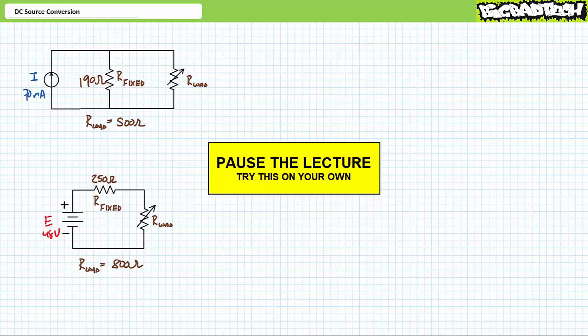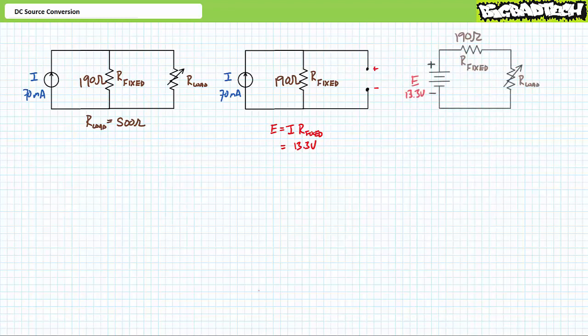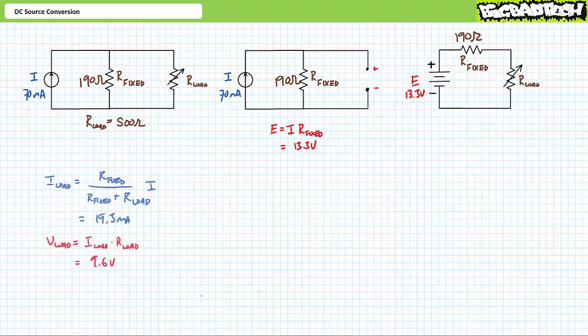If you're tracking, you should obtain the following results. Our first illustrated example features a 70 milliampere current source in parallel with a 190 ohm resistor and a variable load resistor. With the variable load resistance removed, an application of Ohm's law demonstrates the open circuit voltage will be 13.3 volts. Therefore, a 13.3-volt voltage source in series with a fixed 190 ohm resistor should behave identically to our original configuration. As proof of equivalency, our original configuration is a perfect setup for the DC current divider rule.